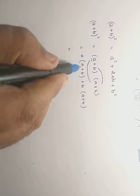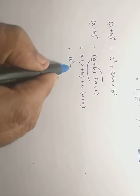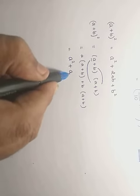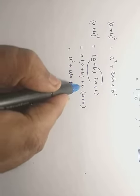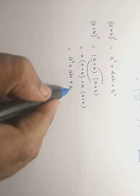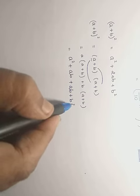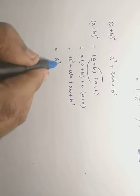That is equal to a into a = a², plus a into b = ab, plus again a into b = ab (that is b into a = ab), plus b² = b².